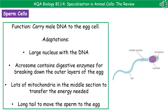Our second specialized cell is the sperm cell. The function of the sperm cell is to carry the male's DNA to the egg cell, where it can join with the female DNA. It has a very large nucleus containing all of the DNA from the father. At the very front there is a structure called an acrosome, which contains digestive enzymes that allow it to break down the outer layers of the egg so the sperm can join with it.